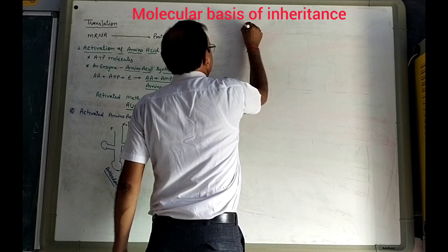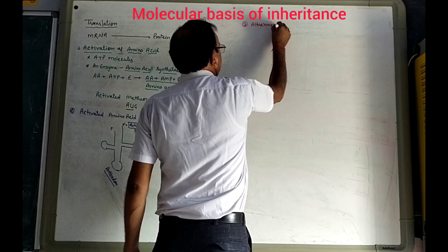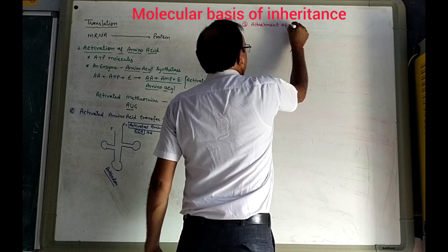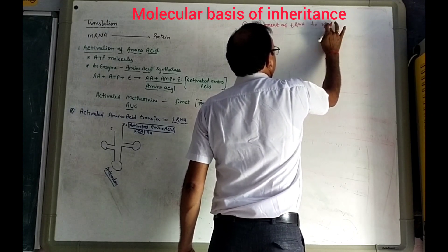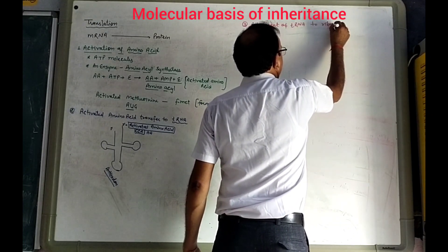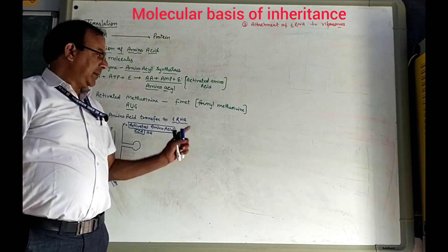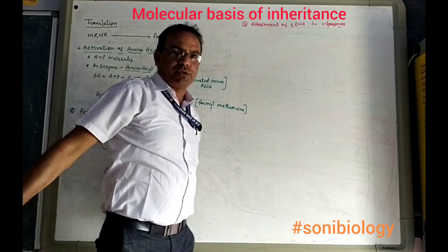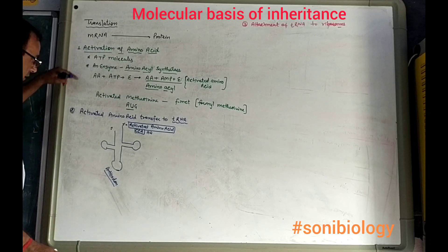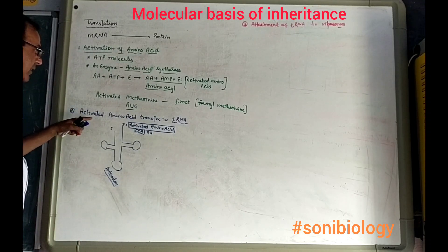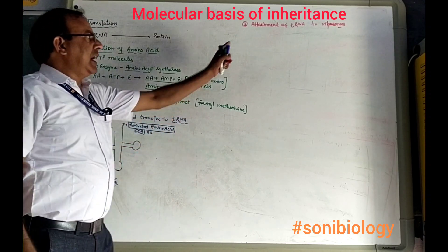Step three is the attachment of tRNA to the ribosomes. This tRNA-amino acid complex attaches to the ribosomes. Ribosomes consist of two subunits. We know that ribosomes help in protein synthesis. The two subunits of the ribosome are present in the cell.